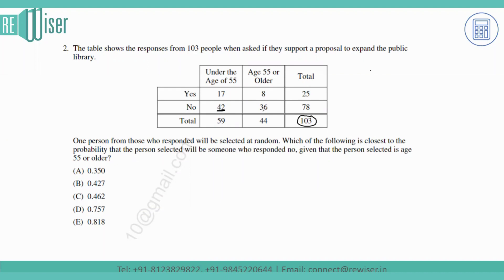It can be either 42 or 36. Given that the person selected is age 55 or older, that means it is this column. The number is 36. The total number of people of age 55 or older is 44, out of which 36 responded no for the expansion of the public library.